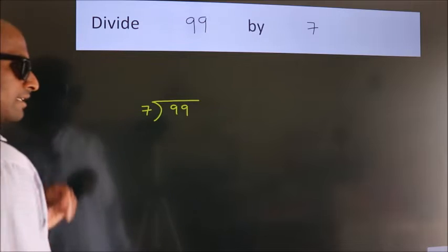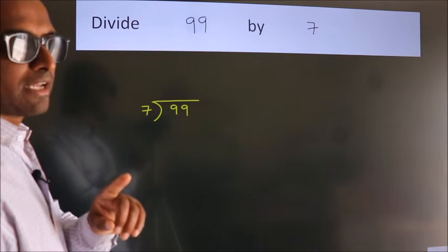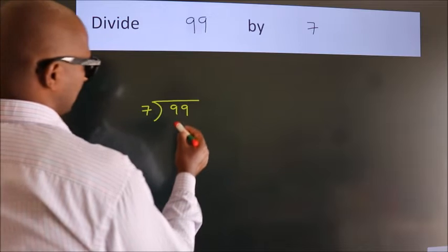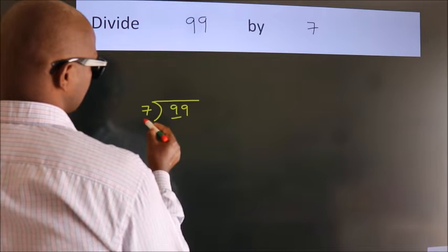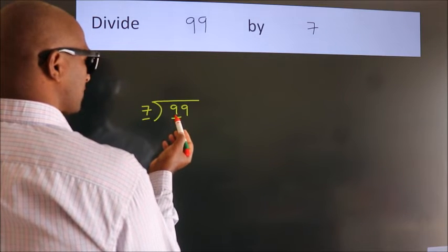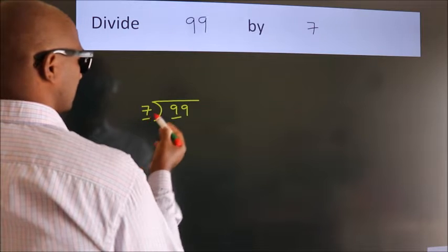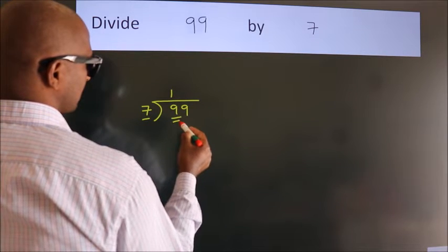This is step 1. Next, we have 9 here and 7 here. A number close to 9 in the 7 table is 7 once, which is 7.